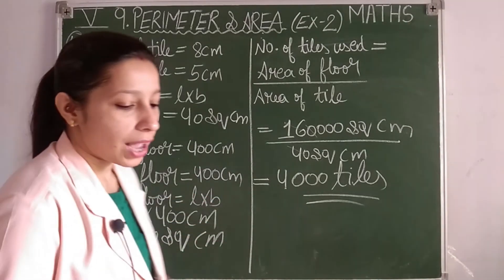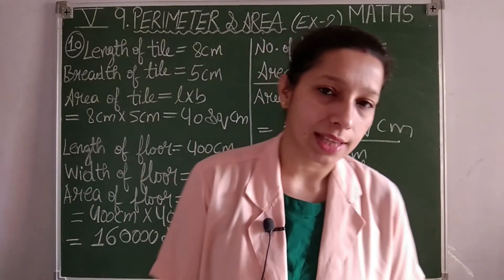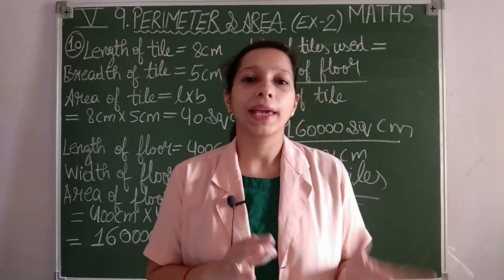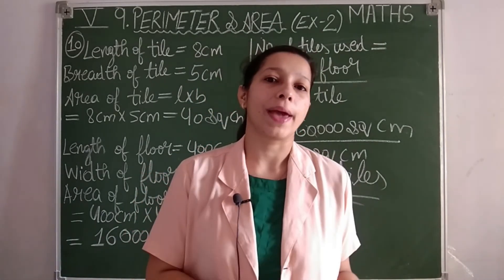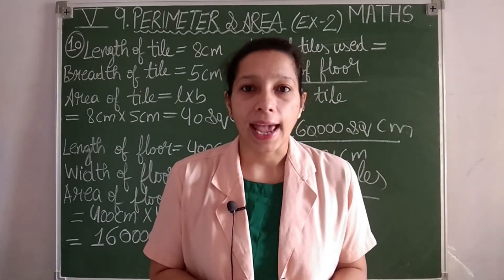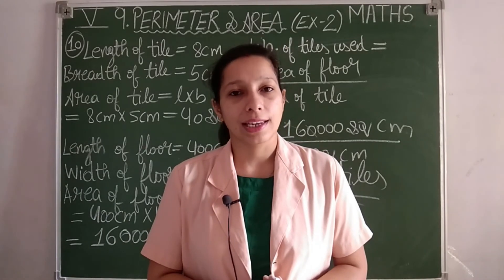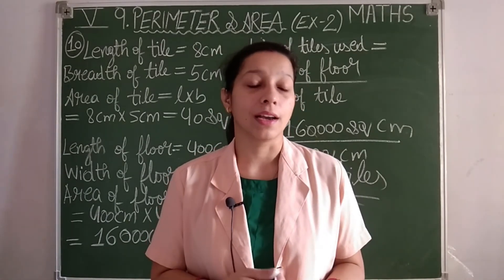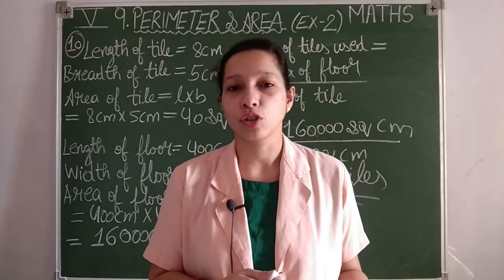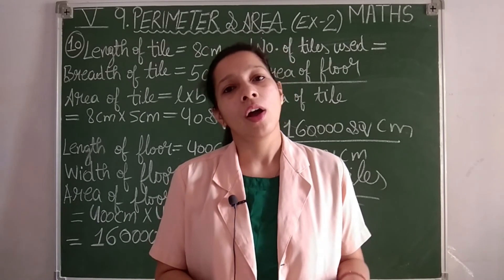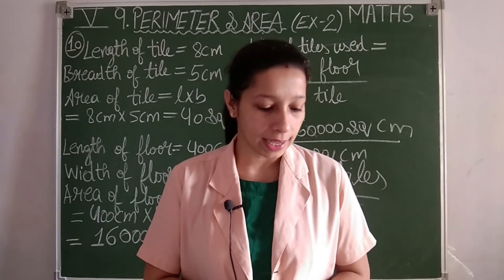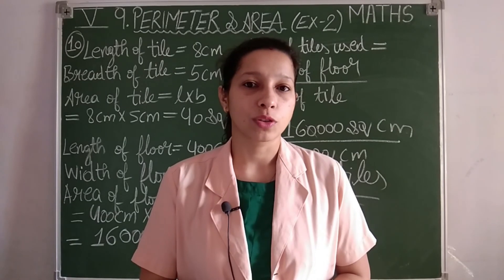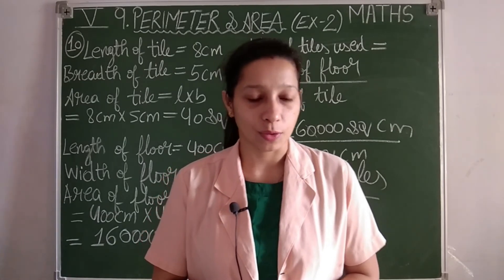With this we have completed the exercise as well as the chapter. I hope the concepts of perimeter and area for rectangle and square are clear. If you have any doubts, message your subject teacher or ask during the live session. Keep your notes complete — that's all for today, thank you.